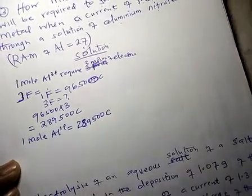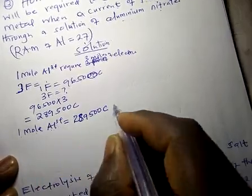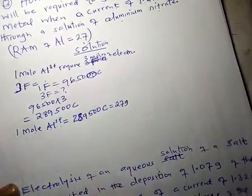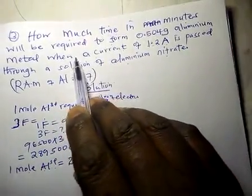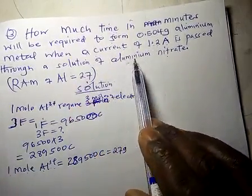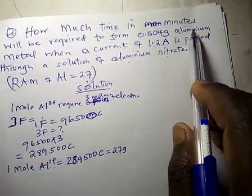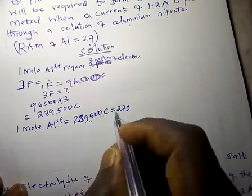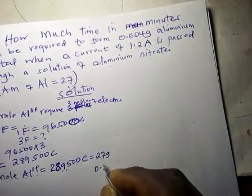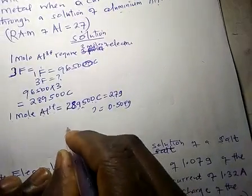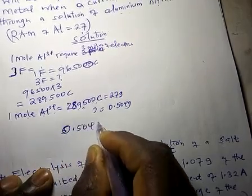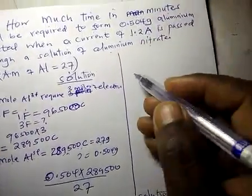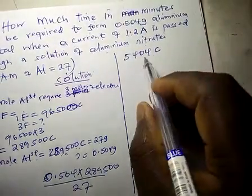1 mole of aluminium equals the RAM, which is 27 grams. We were given that 0.504 grams of aluminium was produced. So if 27 grams corresponds to 289,500 coulombs, we ask: what quantity of electricity corresponds to 0.504 grams? That is 0.504 times 289,500 divided by 27, which gives us 5,404 coulombs.